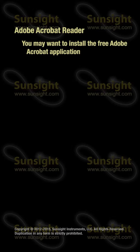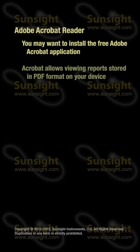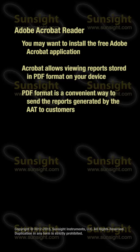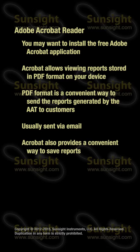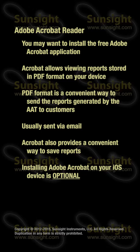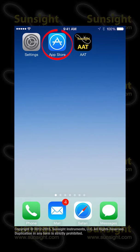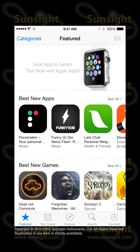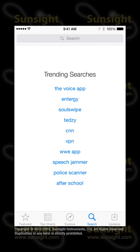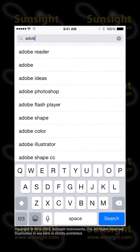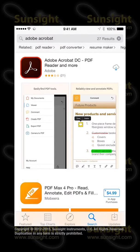You can install the free Adobe Acrobat application from the App Store in order to view and manage AAT reports in PDF format on your iOS device. PDF format is a very convenient way to send reports generated by the AAT to your customers, usually via email. The Adobe Acrobat app also provides a convenient way to save reports and email them later. Note that installing Adobe Acrobat is optional and is not needed to view or email PDF reports on your iOS device. To install it, start the App Store, press the search button, type Adobe Acrobat, and then install the application. Your device must be configured with an account in order to access the App Store.